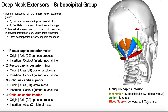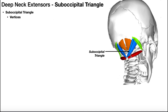Looking at the green muscle (obliquus capitis superior), the red one (obliquus capitis inferior), and the blue one (rectus capitis posterior major), you notice they actually form a triangle. This is termed the suboccipital triangle. We're going to talk about its vertices, its boundaries, and what it contains — things you typically need to know.